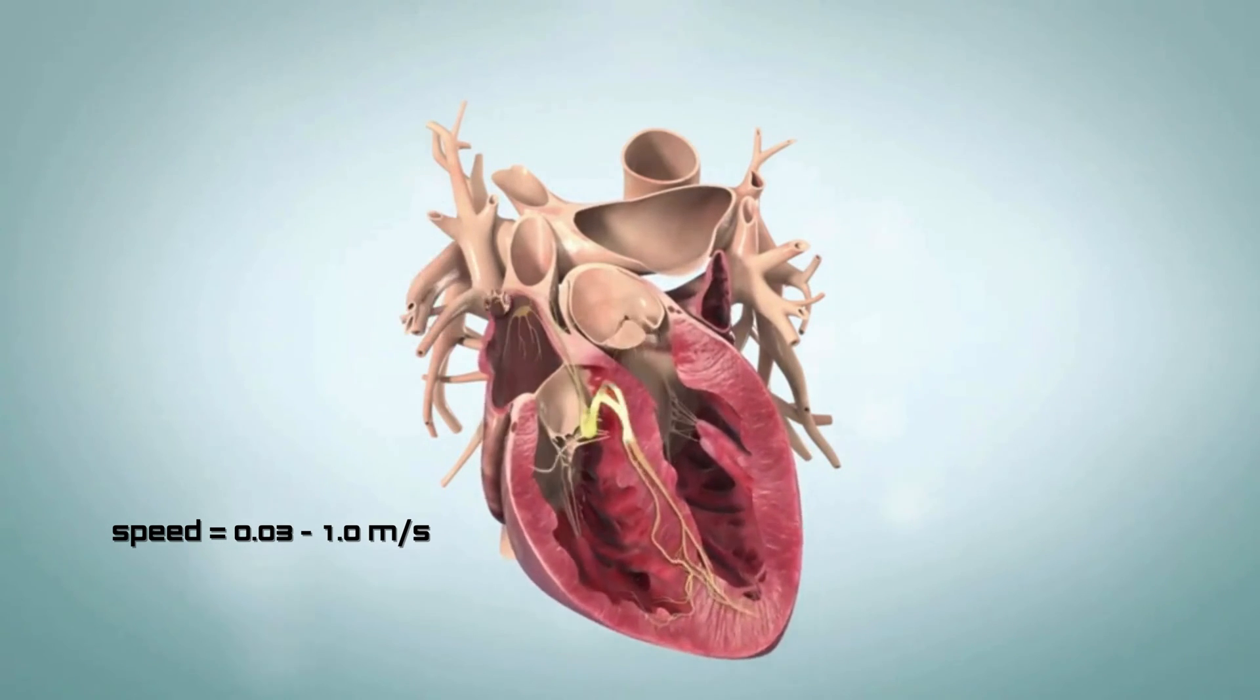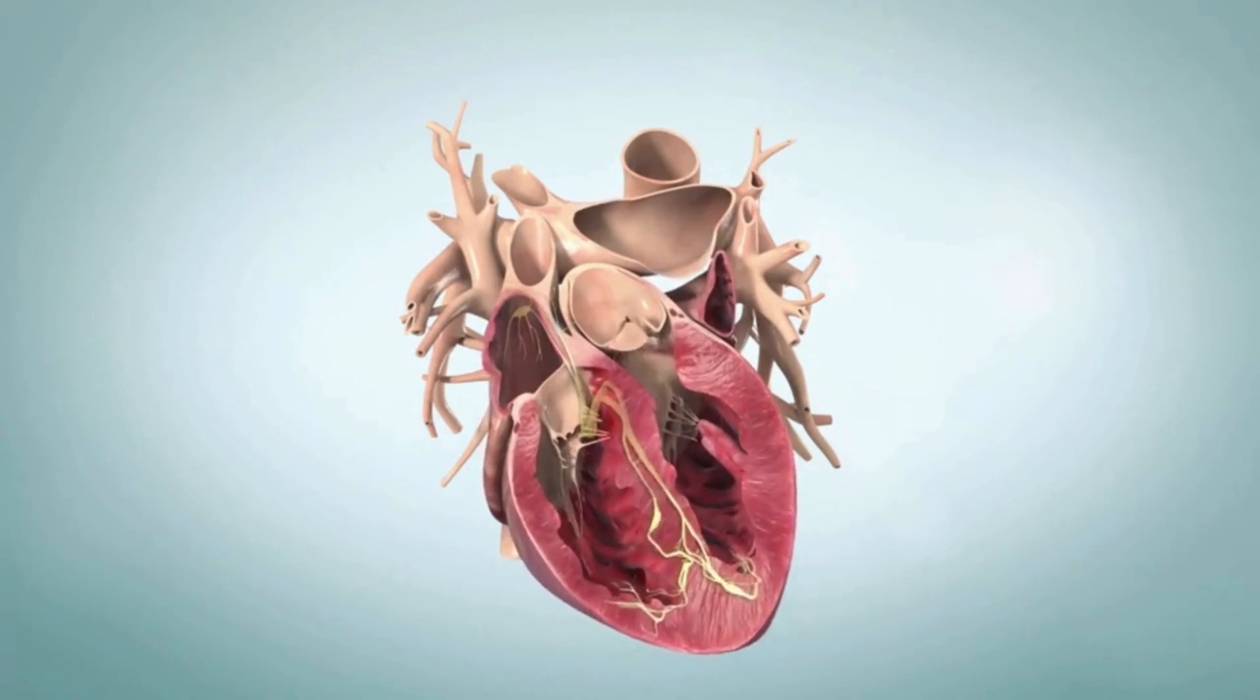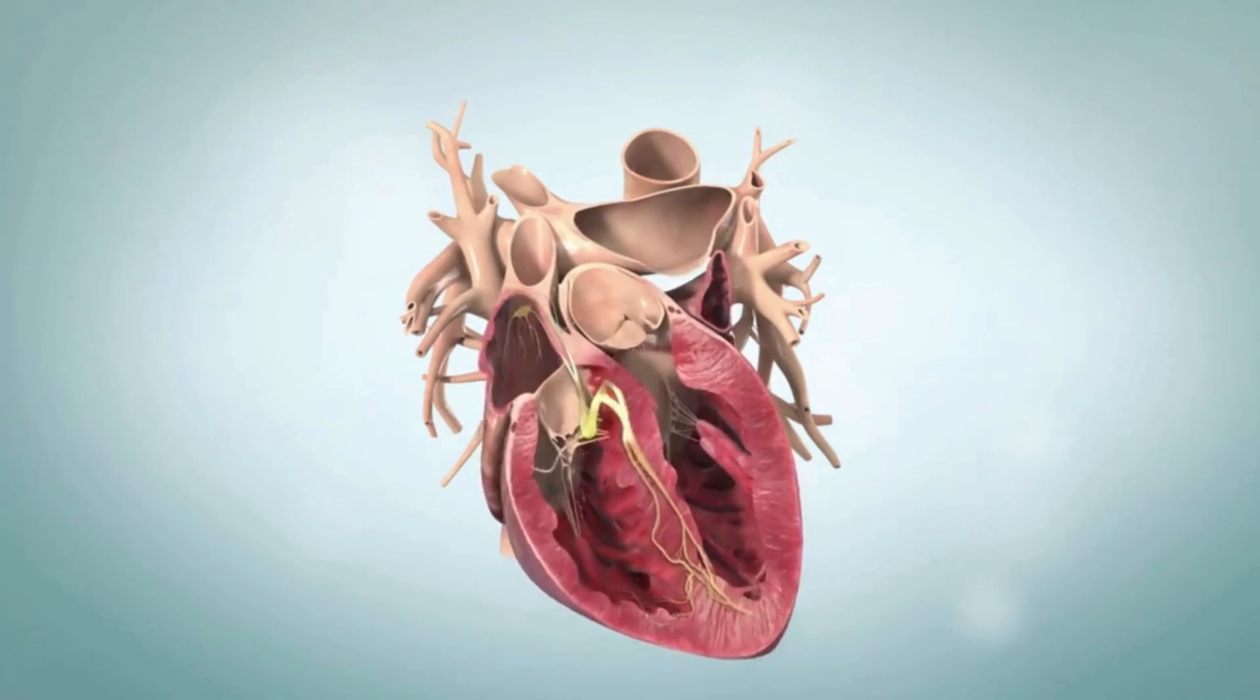the impulse from the SA node spreads through the atria, signaling them to contract. This initial step sets the stage for the heart's rhythmic dance.